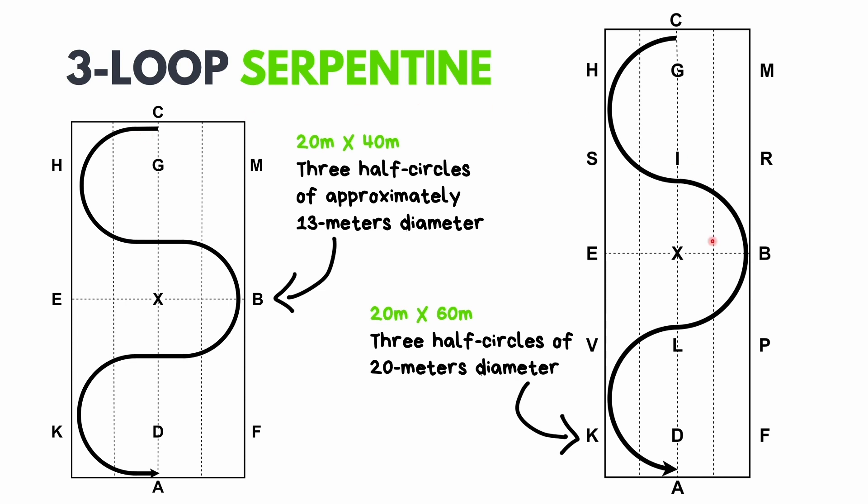However, in this arena the loops are more spread out, which means the half circles are larger and the horse doesn't have to show as much bend through the body, making the exercise slightly easier.